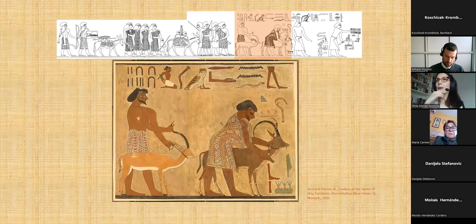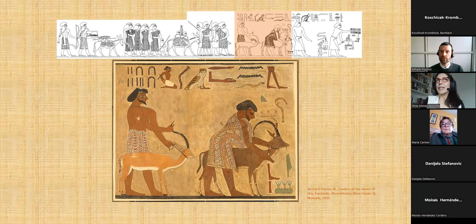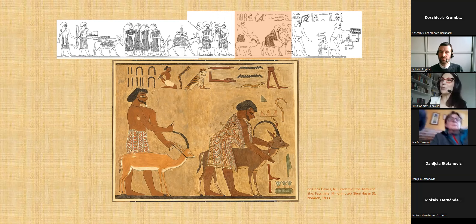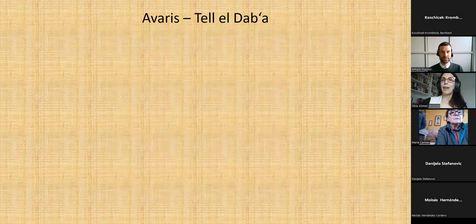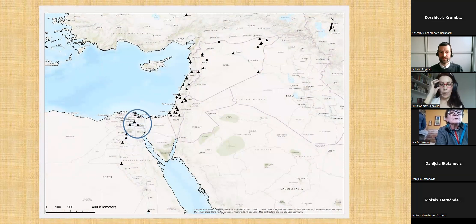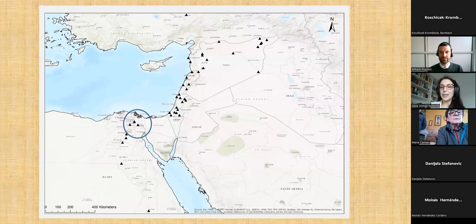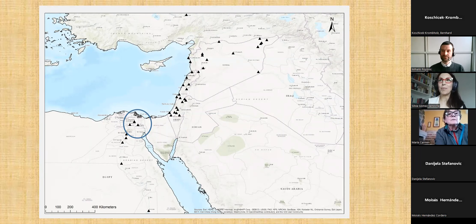For example, there is material from Beni Hassan in Middle Egypt mentioning what has been translated as 'the Asiatics.' This is from a much earlier period, confirming that contacts were not a one-time event but happened continuously over a long period of time. Avaris — Tell el-Dab'a — is again in the northeastern Nile Delta, and we have evidence for this Asiatic or western Asiatic presence there.